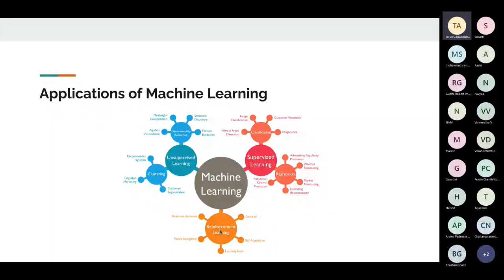And here's reinforcement learning — Tesla is a very good example, where they teach the model as it is learning itself.